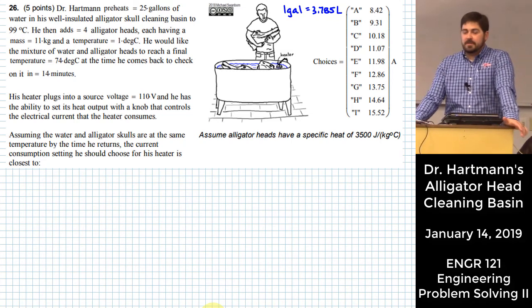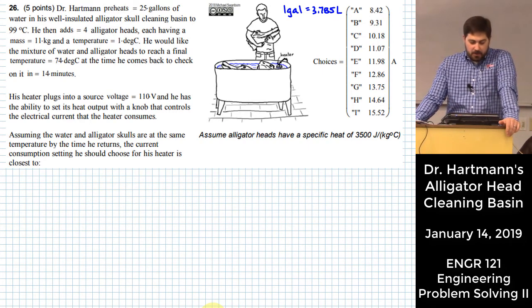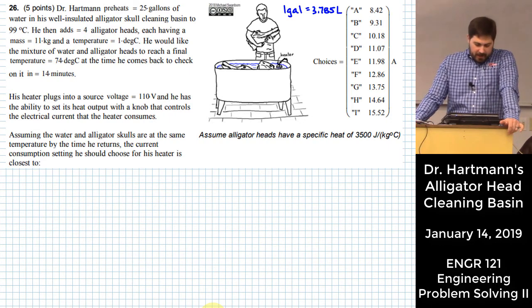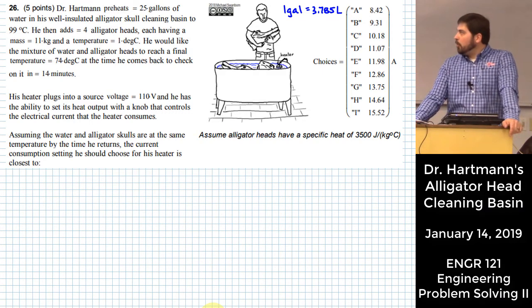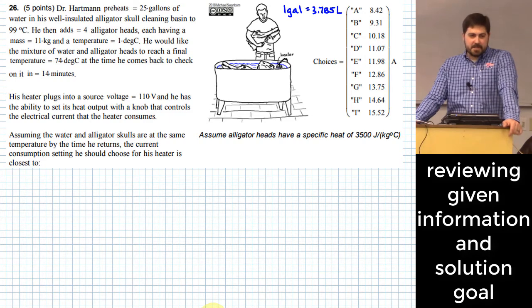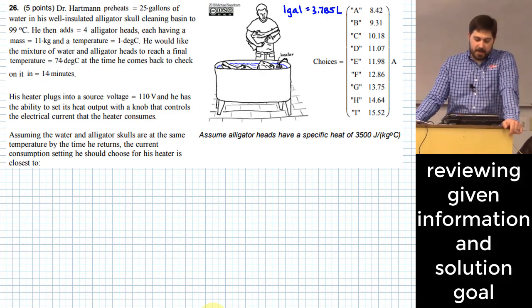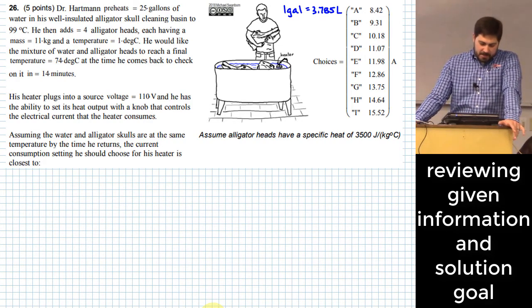All right, so Dr. Hartman, because he is an avid alligator hunter, cleans all of his own alligator skulls in a basin. He starts out by basically almost boiling the water in the basin, taking it up to 99 degrees C. We wouldn't want to have any phase changes, so he makes sure that it stays very slightly below 100 degrees C.